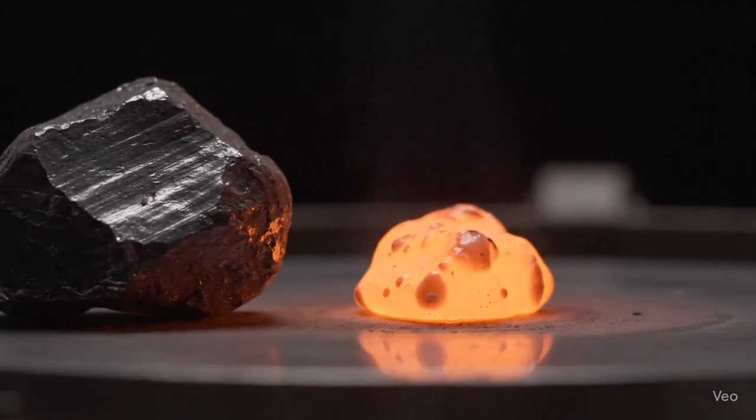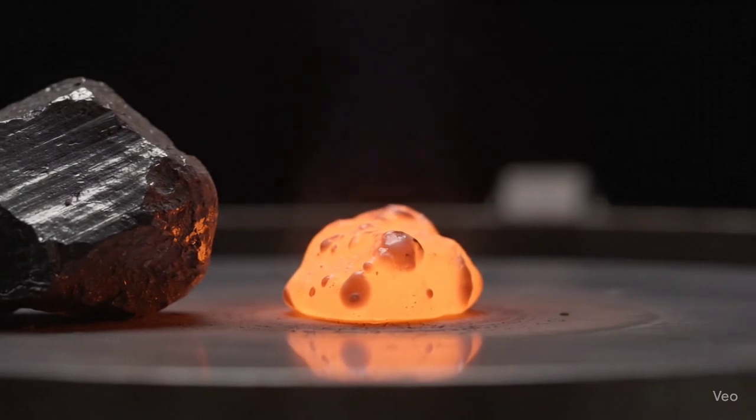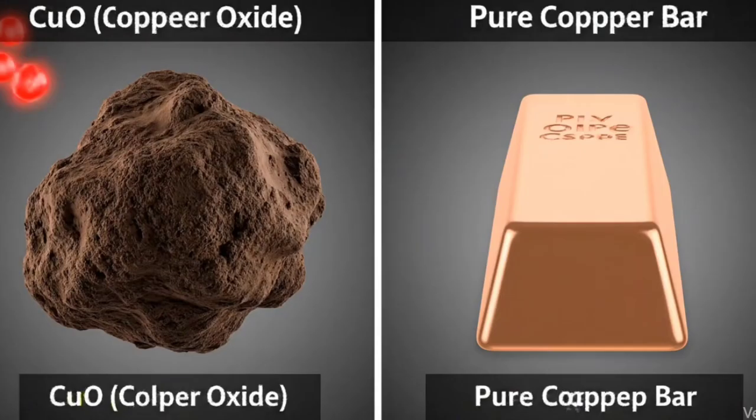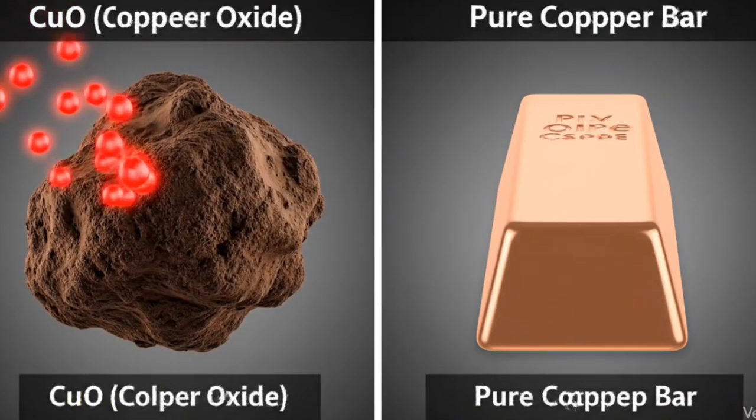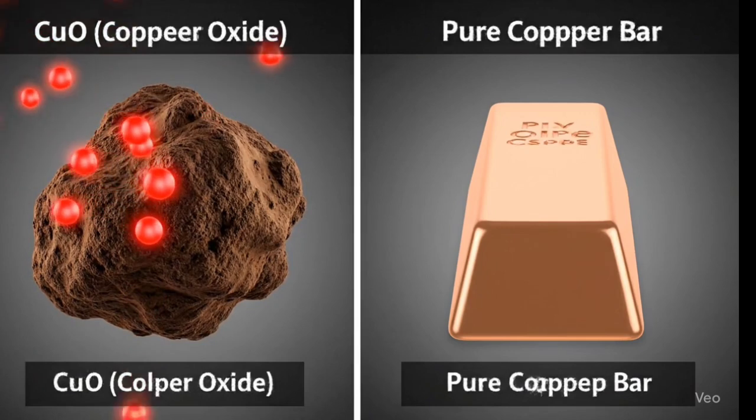Did you know some fluxes can turn oxides back into pure metals? Unlike oxidizing fluxes, reducing fluxes remove oxygen from metal oxides.